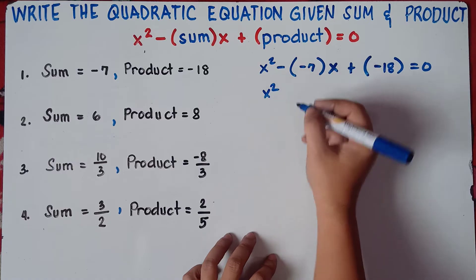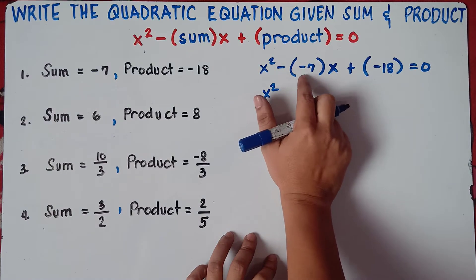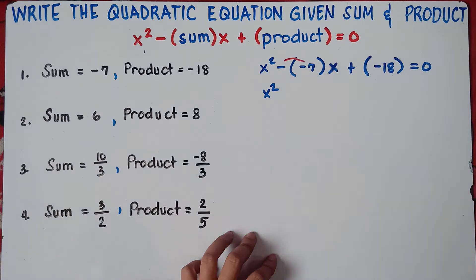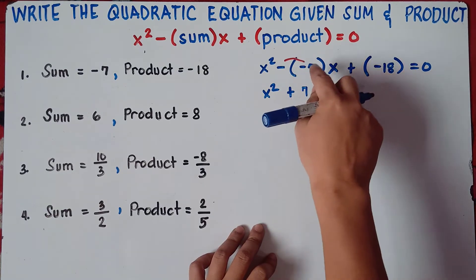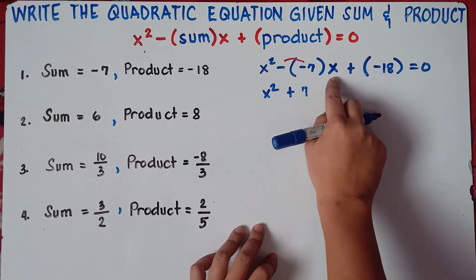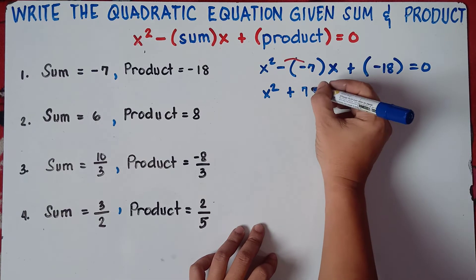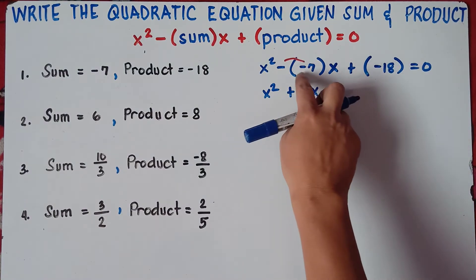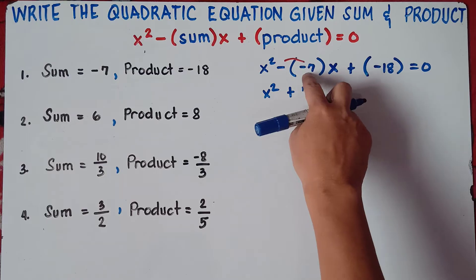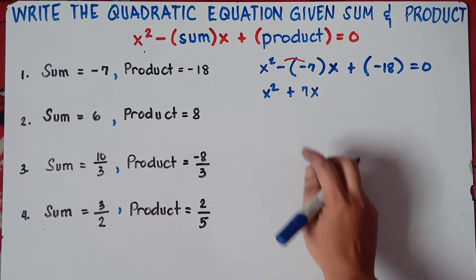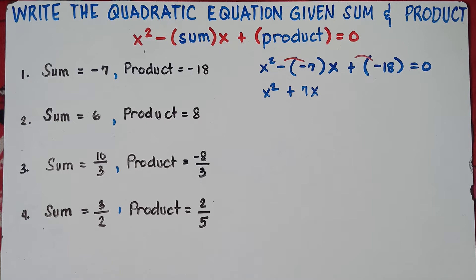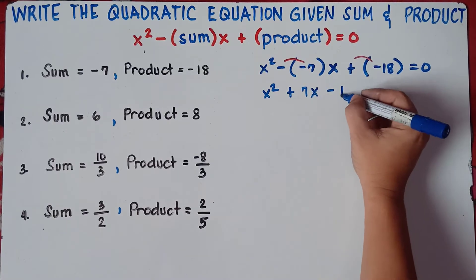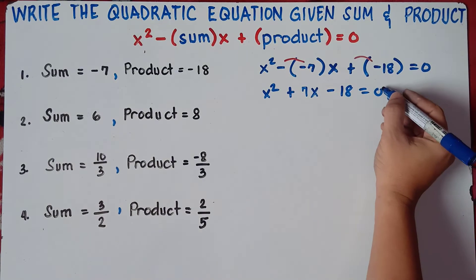And then copy x squared, then multiply the signs — negative times negative. Negative times negative, that would be positive. So negative times negative 7, that would be positive 7 times x, that is 7x. Then multiply the signs: positive times negative. In multiplication, unlike signs, the answer is always negative. So positive times negative, that would be negative 18, equals 0.